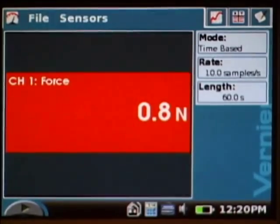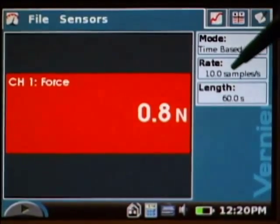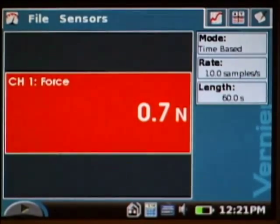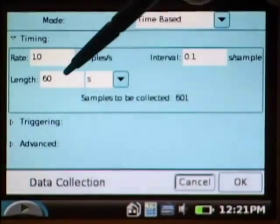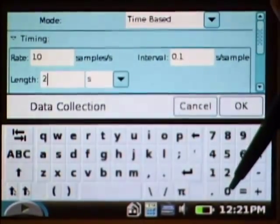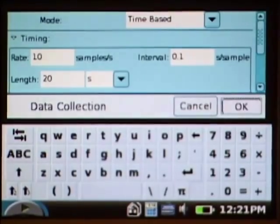Again, it's auto-identified the sensor, but instead of doing a run for 60 seconds, this time I'm going to change the experiment duration by tapping length again, and changing it from 60 seconds to 20 seconds, because we're going to be comparing pincer grip strength of the different fingers.